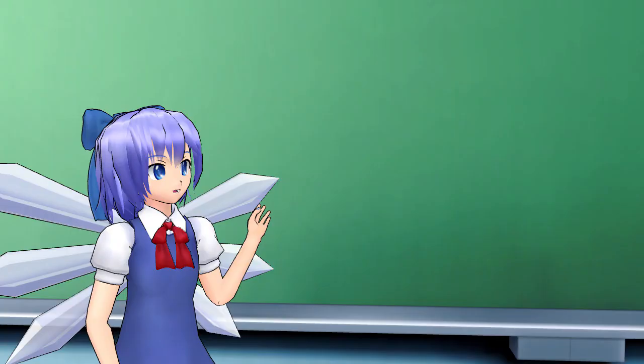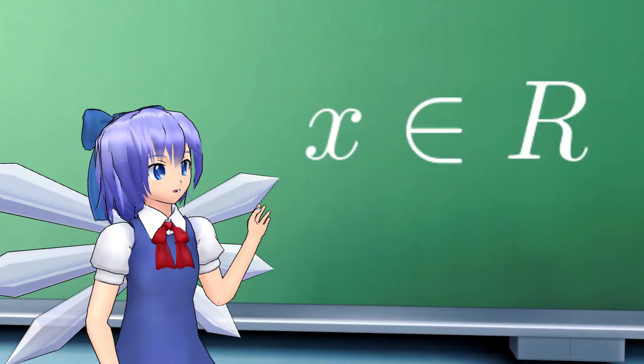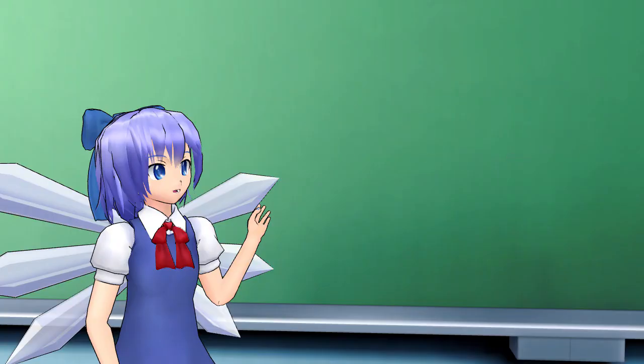Alright, so let R be one of these boolean rings. First of all, for any x in R, we have that minus x squared equals minus x.